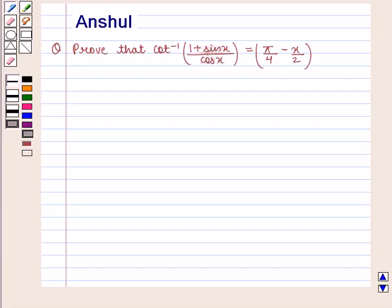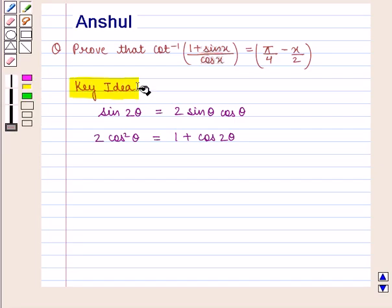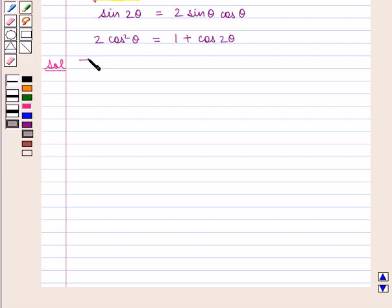Hello and welcome to the session. In this session, we are going to discuss the following question: Prove that cot inverse of (1 plus sin x) upon cos x is equal to pi by 4 minus x by 2. We know that sin of 2 theta is equal to 2 sin theta cos theta, and 2 cos square theta is equal to 1 plus cos 2 theta. With this key idea, we shall proceed with the solution.